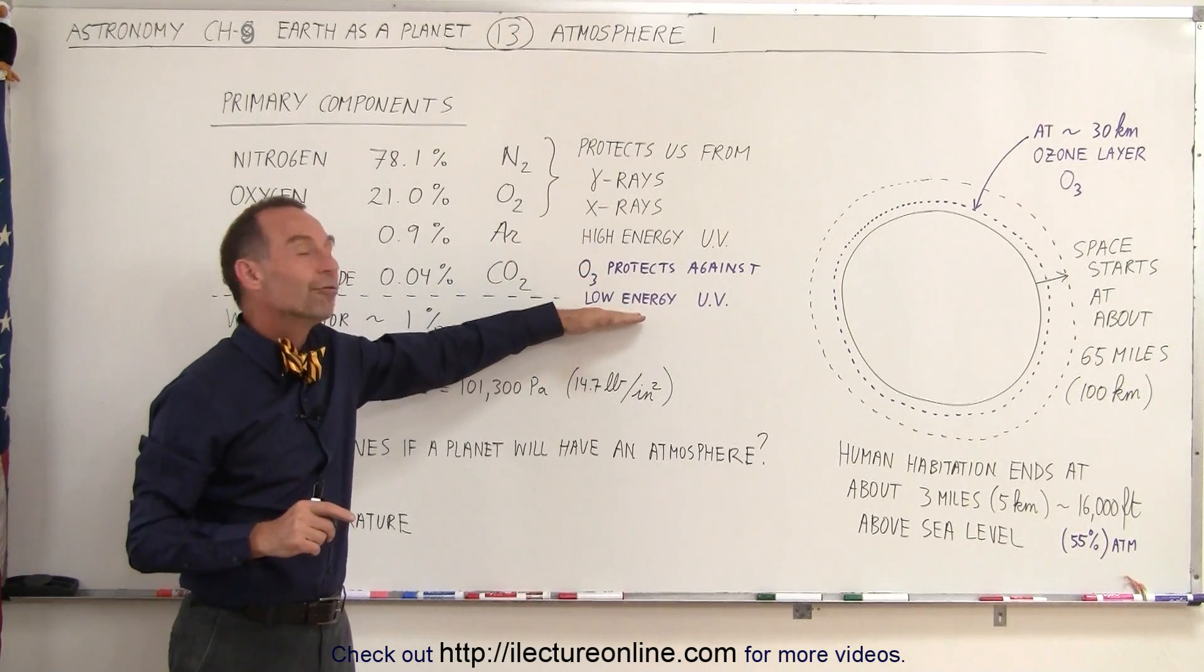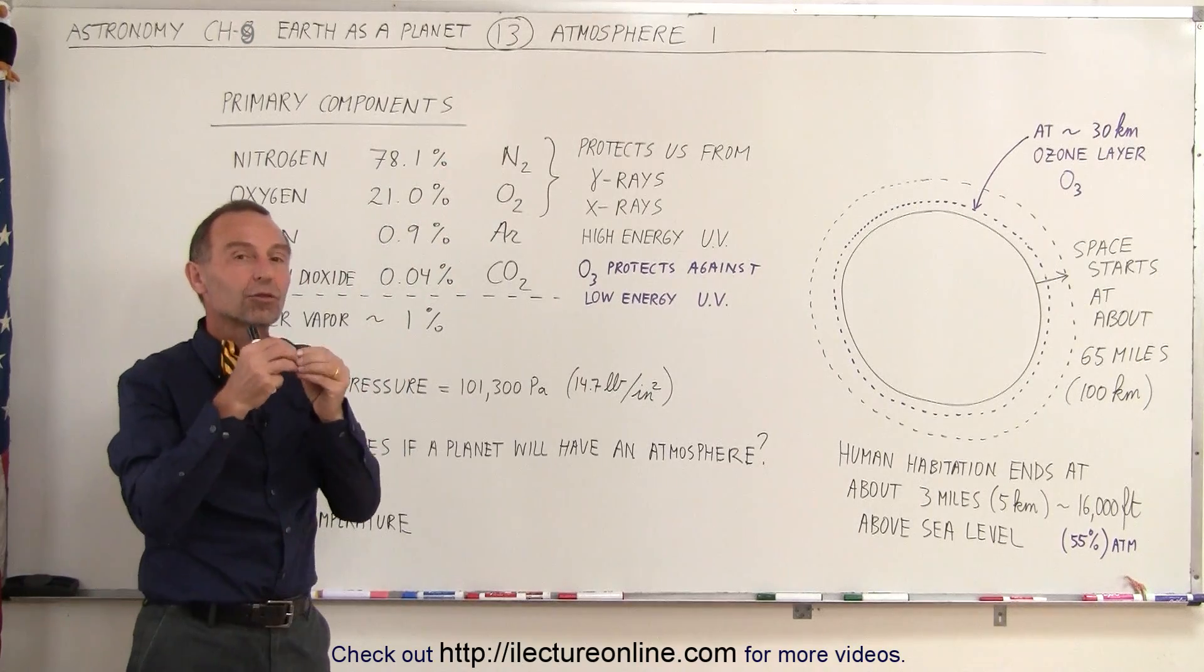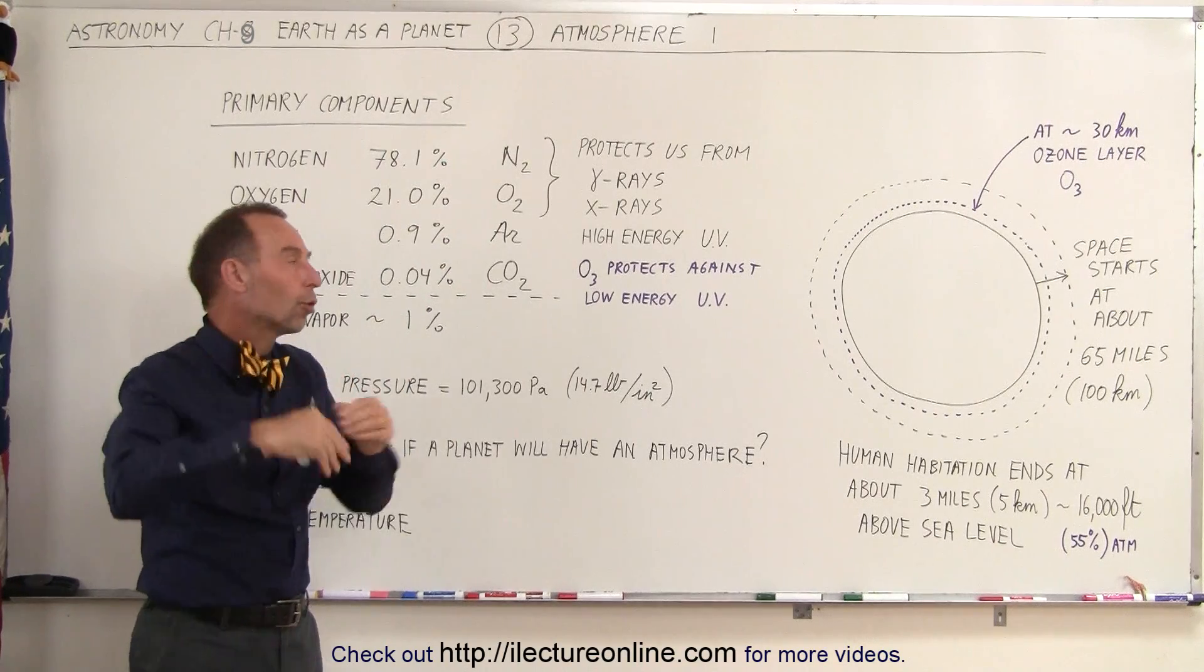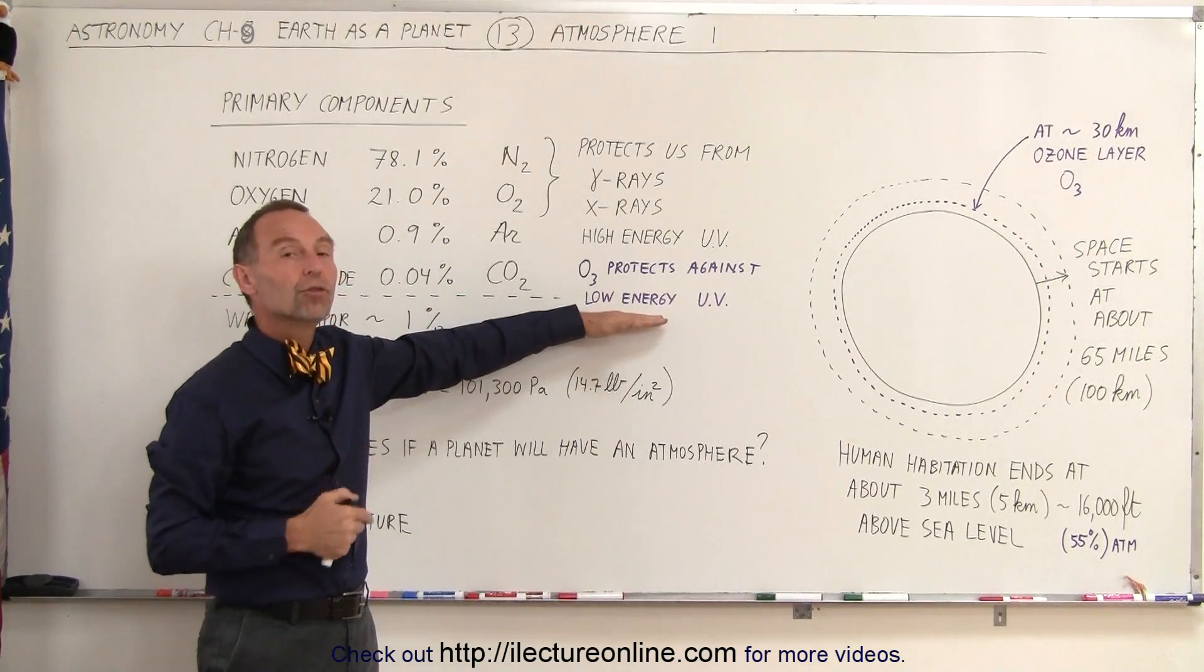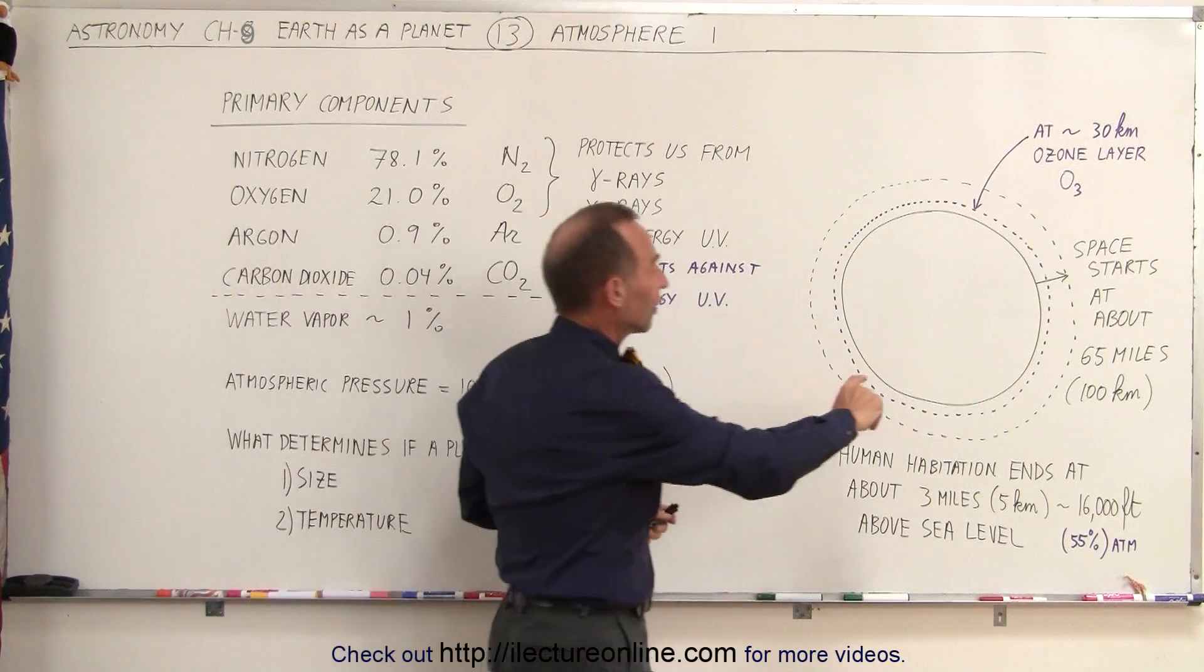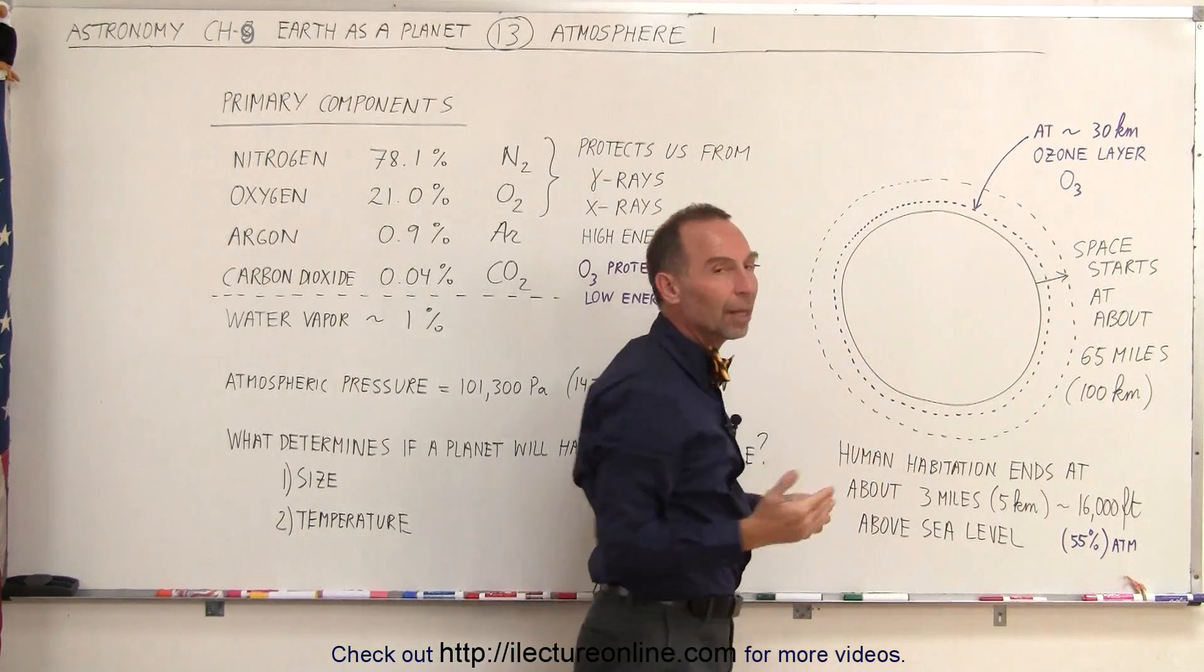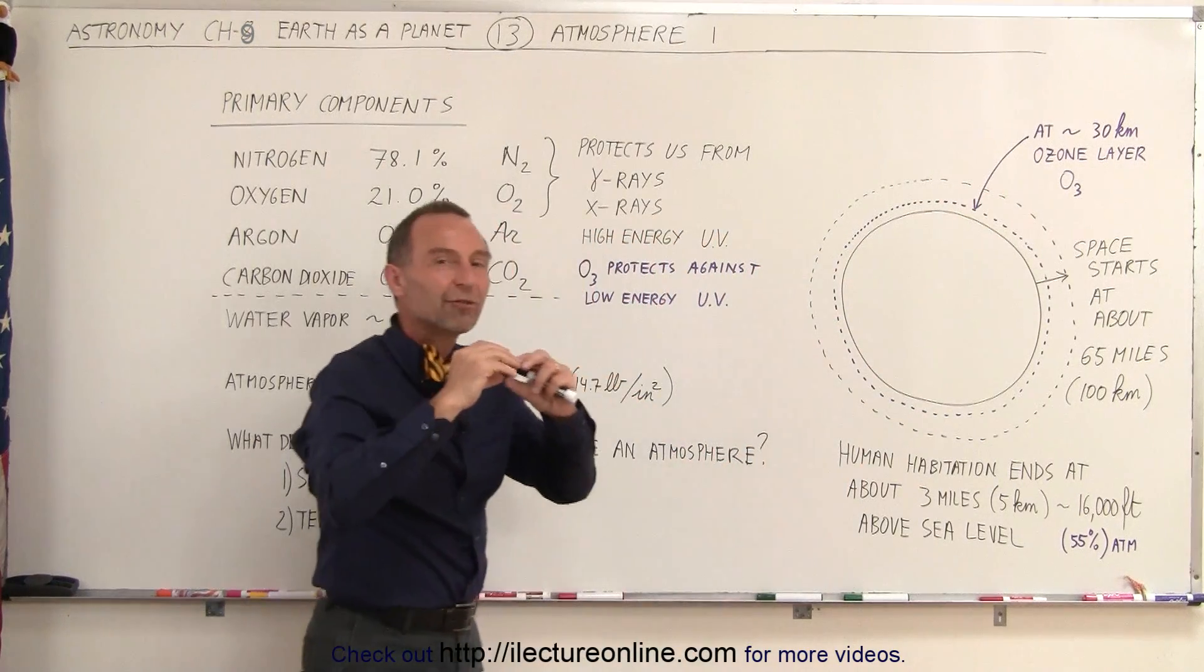Unfortunately, low-energy UV cannot be held back by these two gases, because the bonds are too strong and cannot absorb the energy contained within low-energy UV. Luckily, there's another layer, and here I have a little schematic here, there's another layer, a very thin layer, at about 30 kilometers above sea level, where we have ozone.